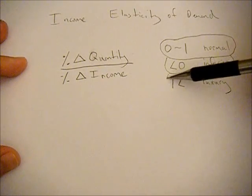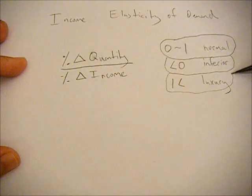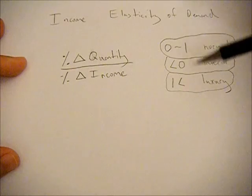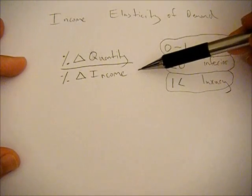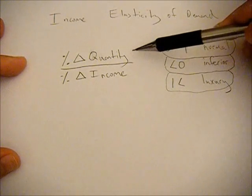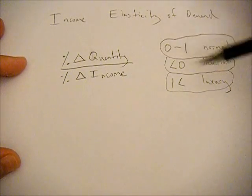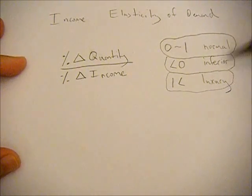If the income elasticity of demand is greater than one, it's a luxury good. This also means that as your income declines, you consume a larger percentage less of that luxury good because you have to substitute away from it to consume those normal and inferior goods when your income decreases.